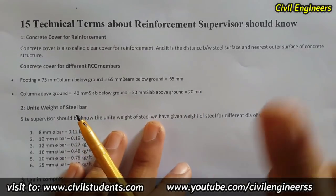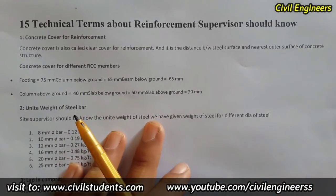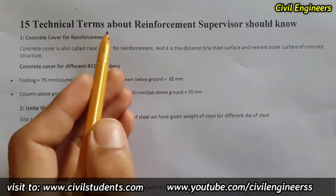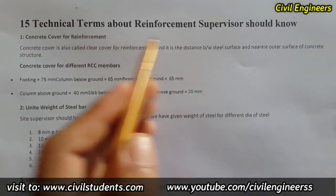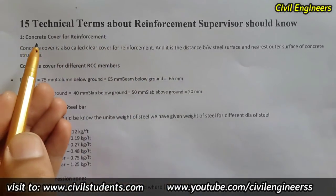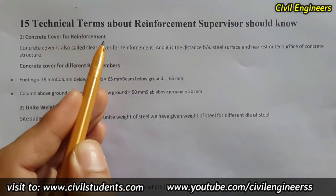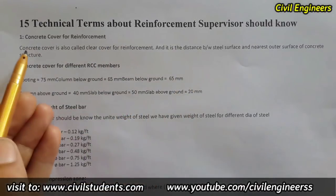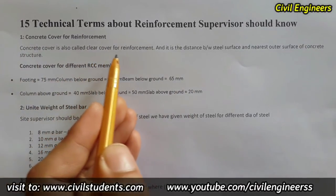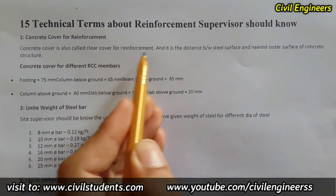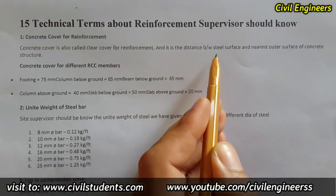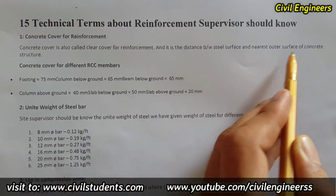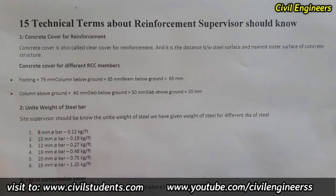Let's get started and don't forget to like and share this video with your friends. The first of the 15 technical terms is concrete cover for reinforcement. Concrete cover is also called clear cover for reinforcement, and it is the distance between the steel surface and the nearest outer surface of the concrete structure.